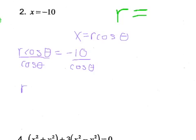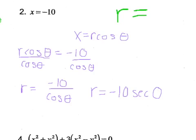So we end up with R equals negative 10 over cosine theta. And we remember that whenever cosine theta is in the denominator, it is really the inverse of cosine, which is secant. So our final answer is negative 10 secant theta.